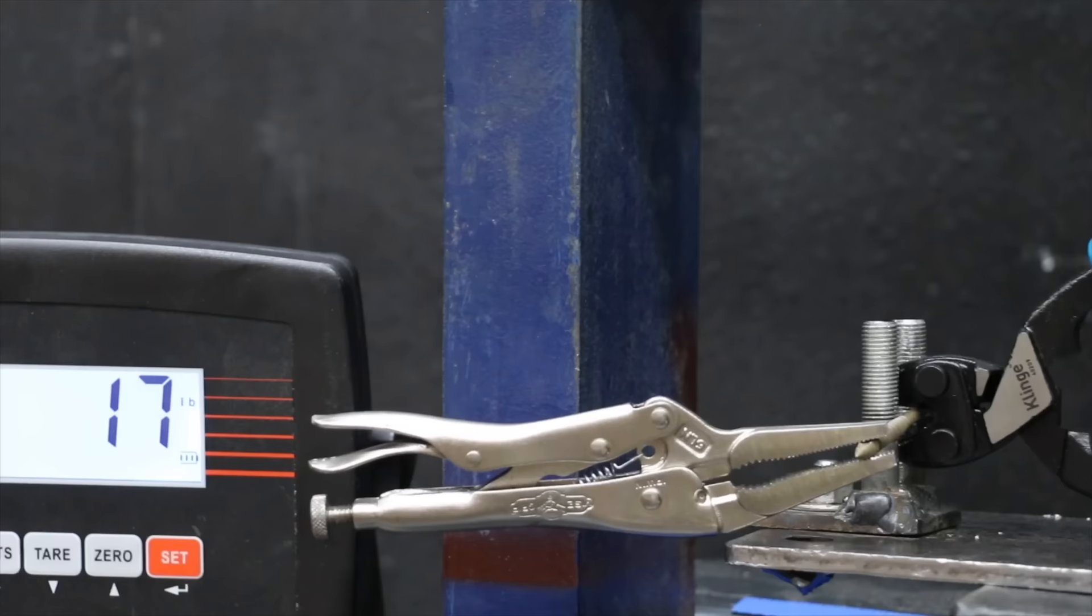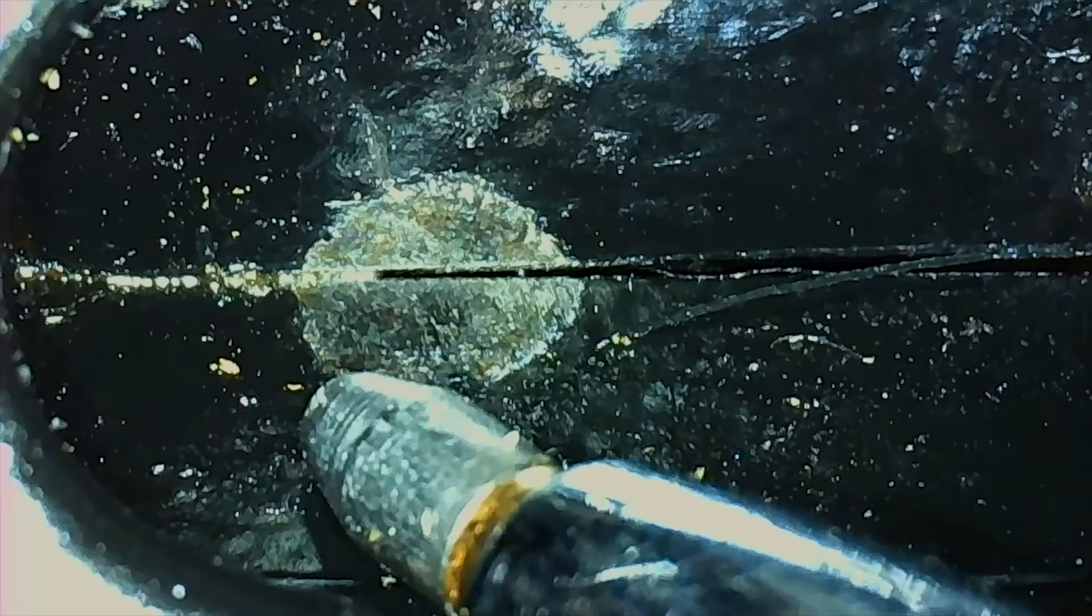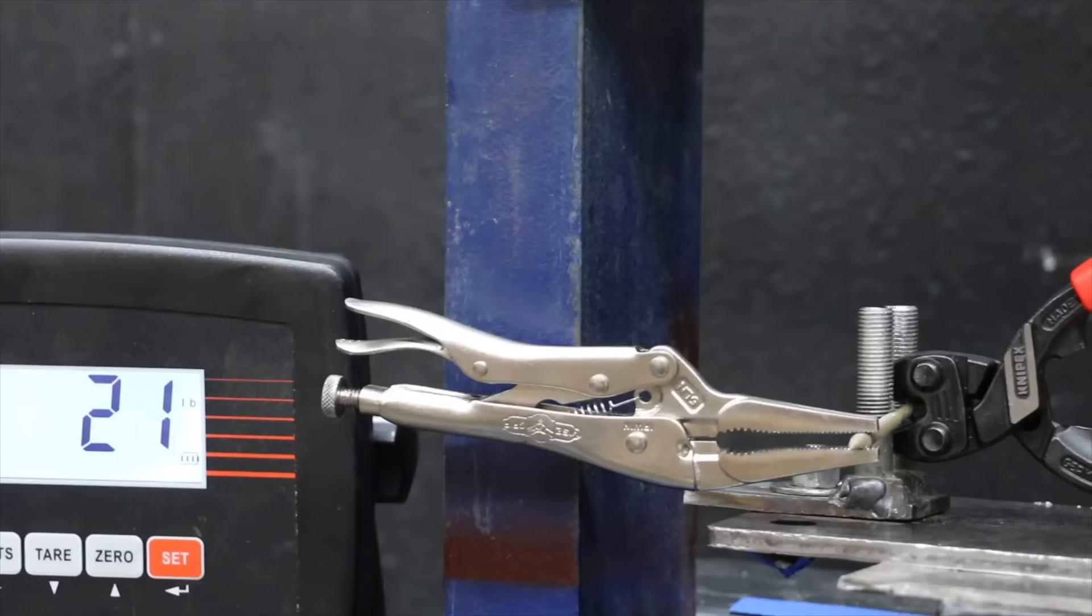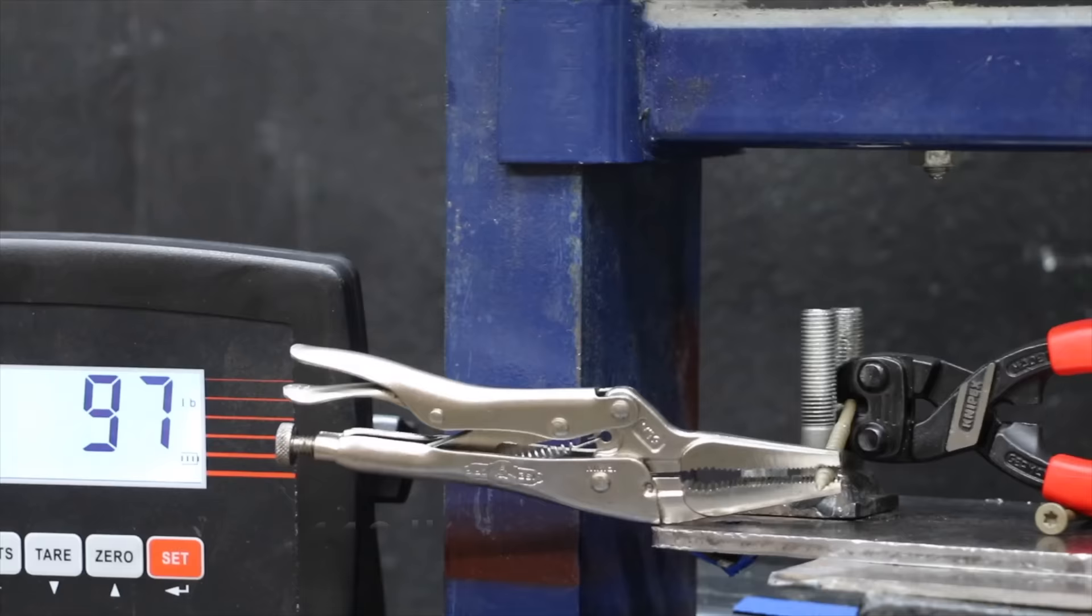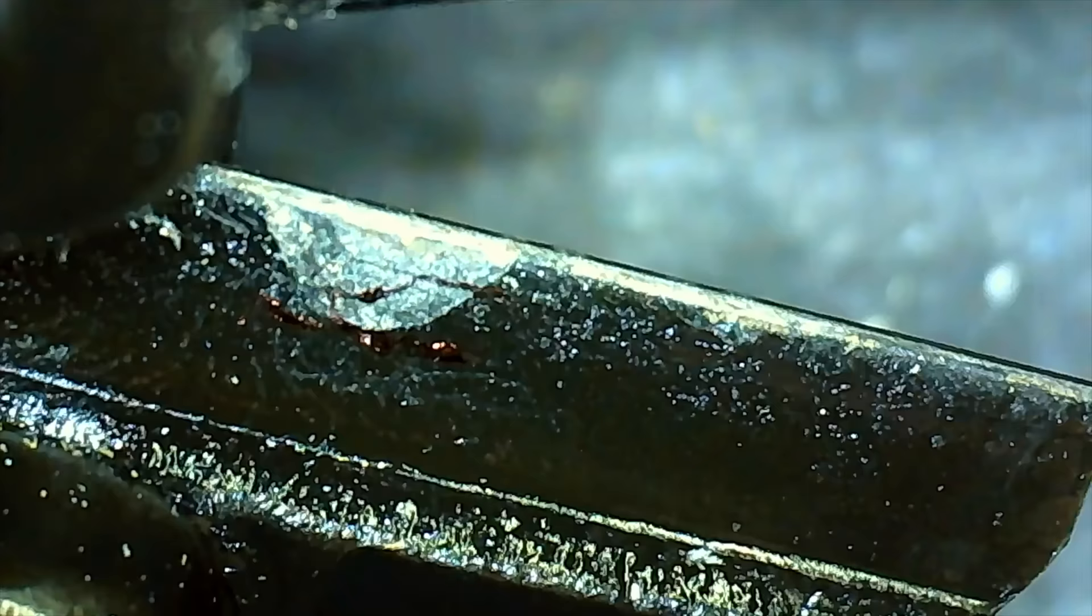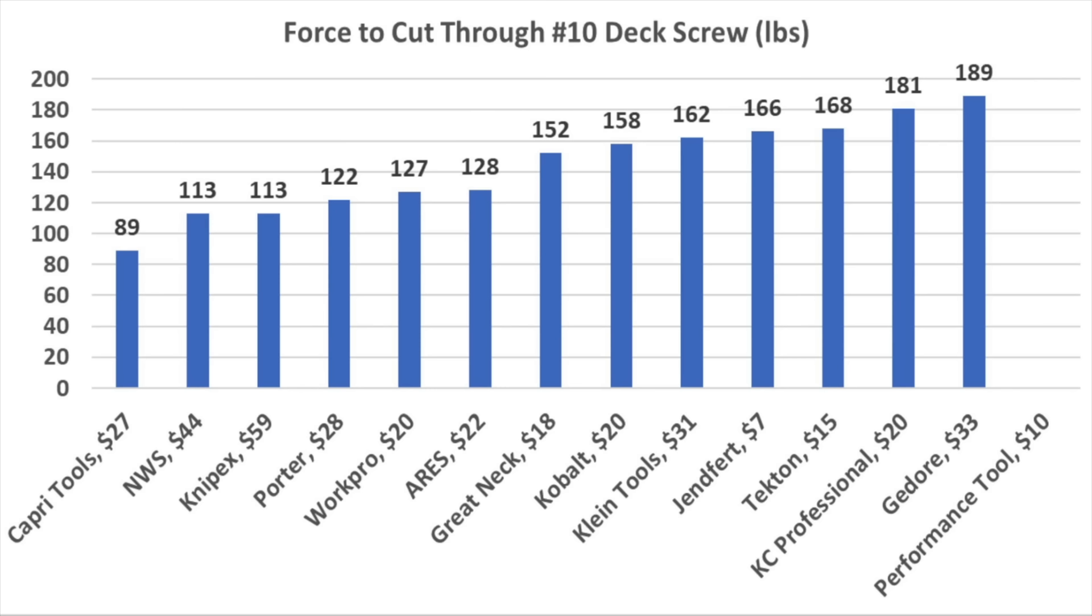As a point of reference, the Cabri Tools easily cut through the deck screw at only 89 pounds of force. Very impressive! The cutting knives still look very good. The Knipex also made very easy work of the deck screw at 113 pounds of force on the handle. The cutting knives remained in good shape. The Performance Tool bolt cutters were the only brand that did not survive cutting through the deck screw.